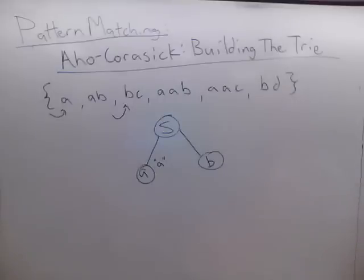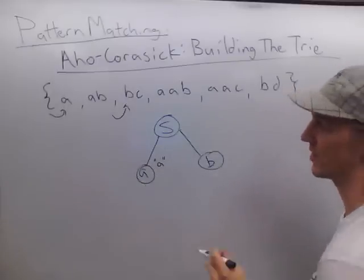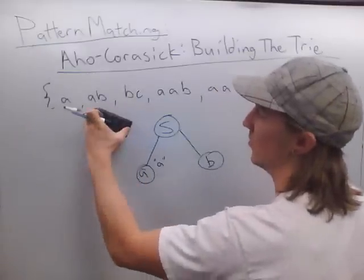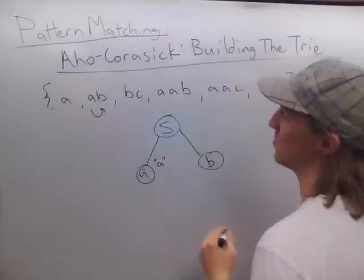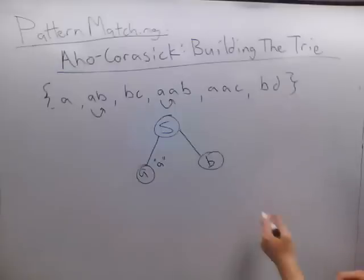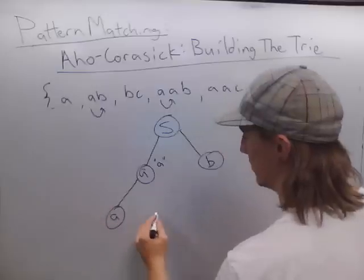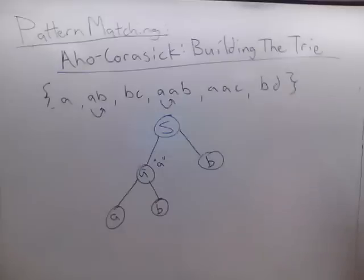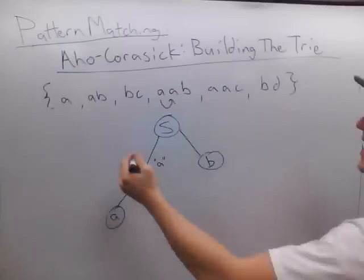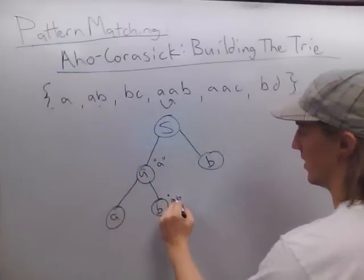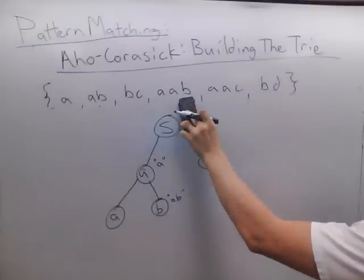Now I'm going to continue this process recursively. From A, once I've seen an A, what character can I see after that? When the word starts with A, the next character I can see is a B or another A. So I'm going to add those children: I can see another A, or I can see a B. Remember, we're adding output to the nodes that terminate an entire word from our dictionary. So this is going to have output AB. AA does not terminate a word, because there are still characters left to be consumed.